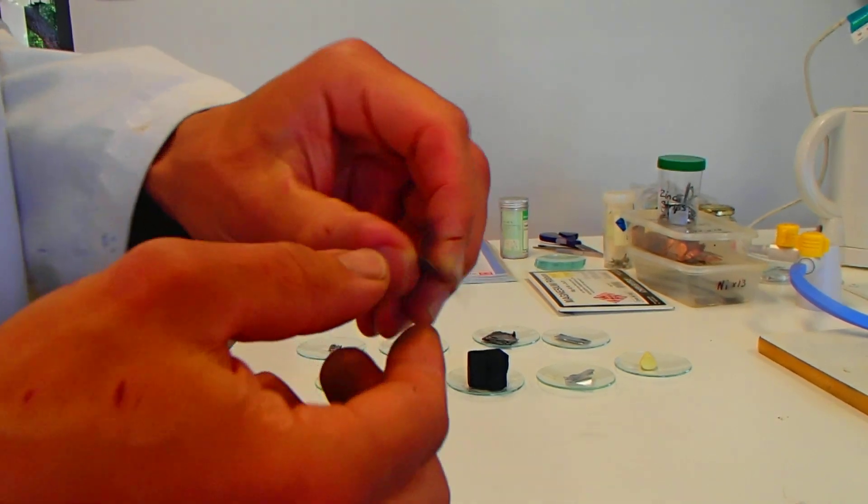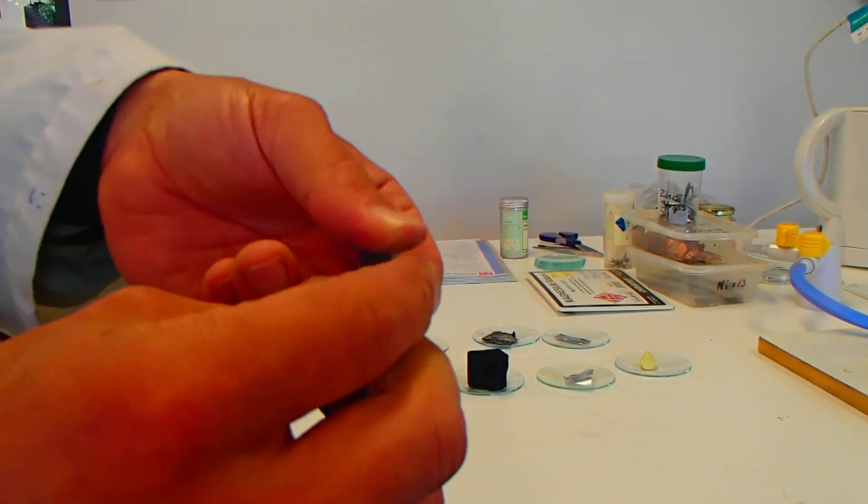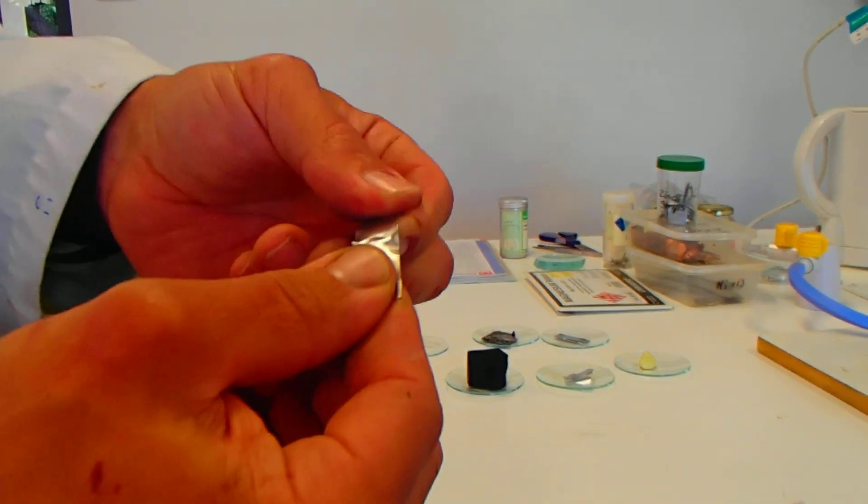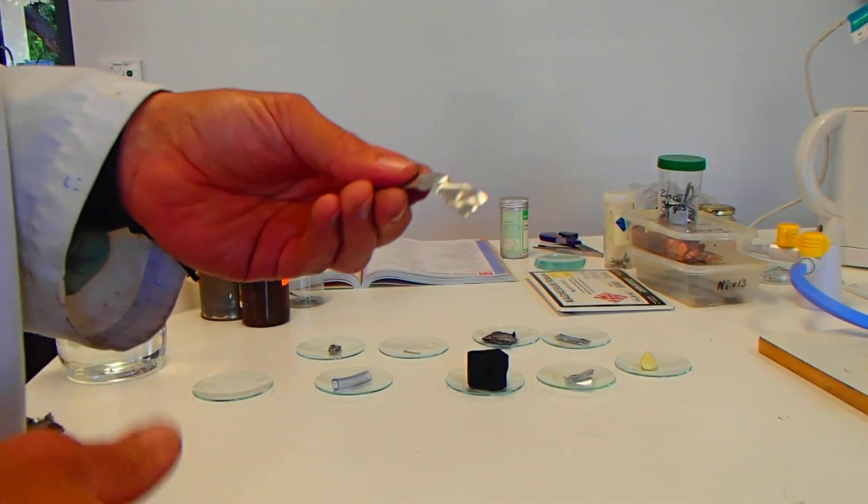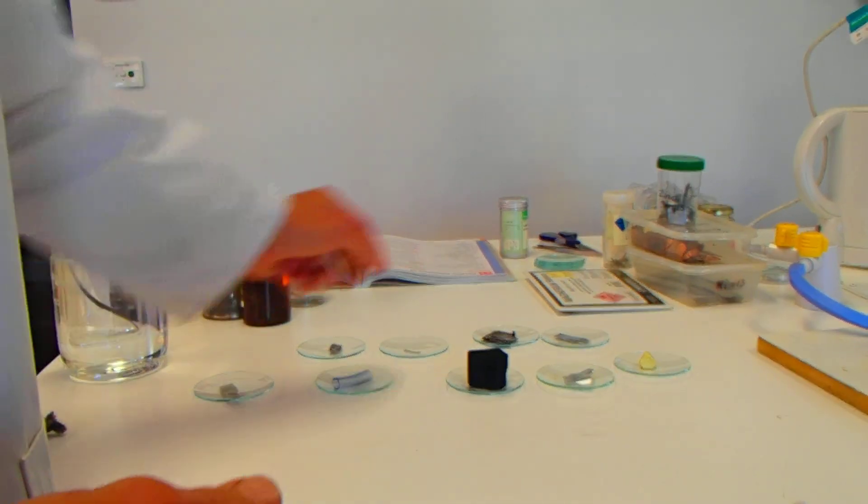Moving on to the tin. Easily bendable, similar to the aluminum. Keeps its shape when bent. Doesn't crumble. I can't really tear it as easily as aluminum. So not really tearable, but definitely bendable. Again, you should be writing down all these properties in your results table that you have in your book or online.